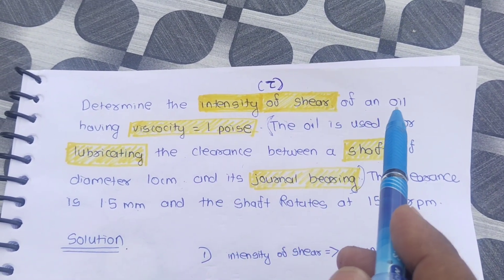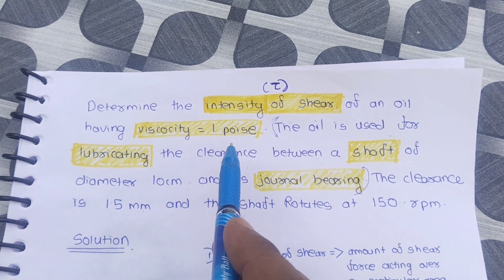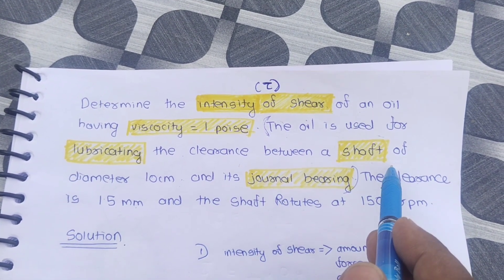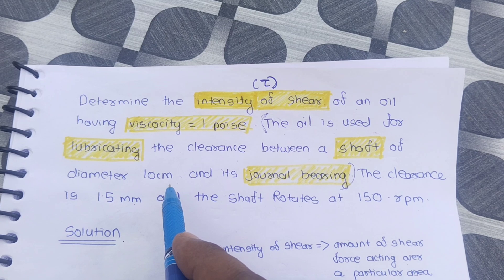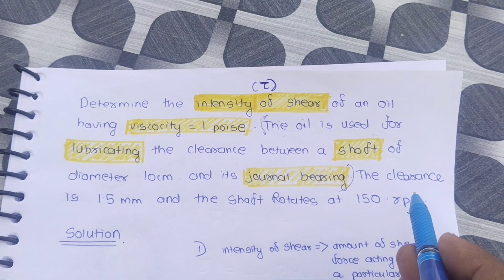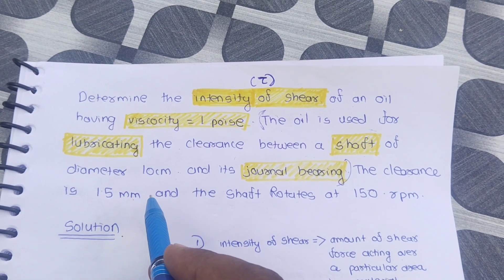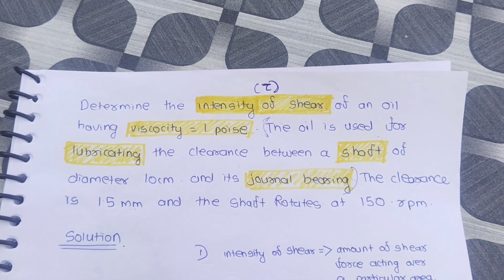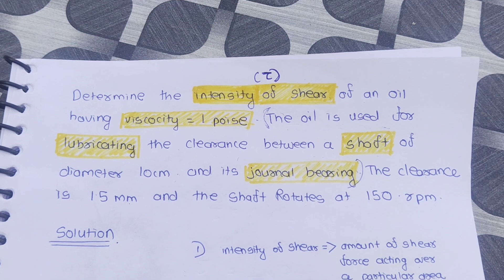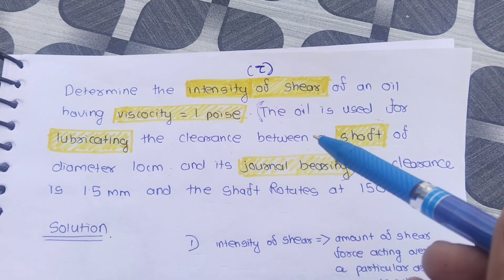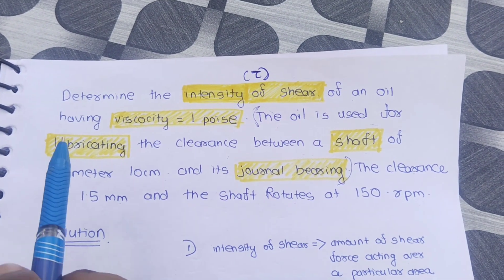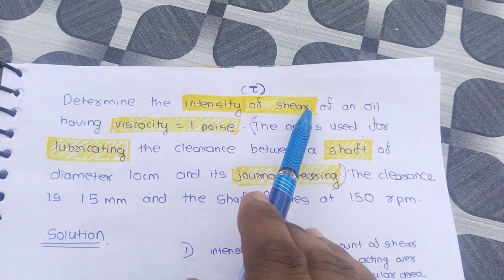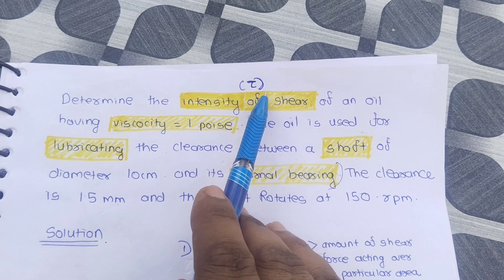Determine the intensity of shear of an oil having viscosity one poise. The oil is used for lubricating the clearance between a shaft of diameter 10 centimeters and its journal bearing. The clearance is 1.5 mm and the shaft rotates at 150 rpm. We have to find the intensity of shear, which is denoted by tau.